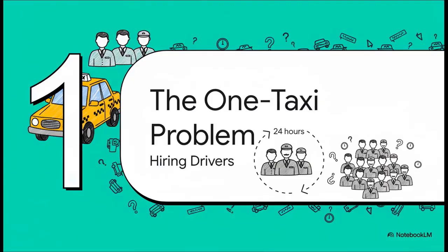Section one: The one taxi problem. Let's really think this through. You've got one taxi, one driver. Well, they can't work 24-7, so you hire a second, then a third. Three drivers, eight-hour shifts. Perfect. The cab is always out there making money. But what happens if you hire 10 drivers, or how about 50? What does that look like?